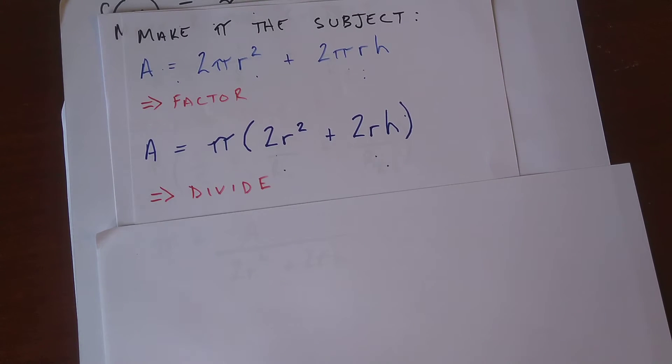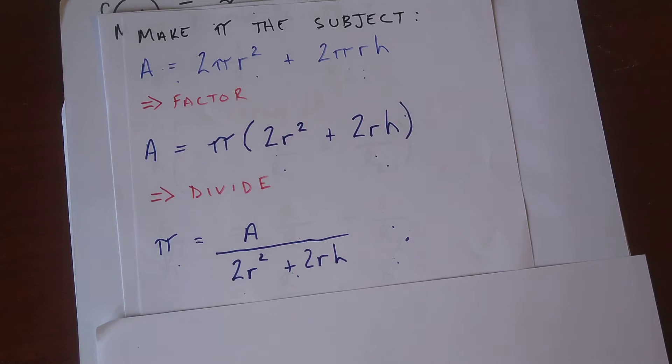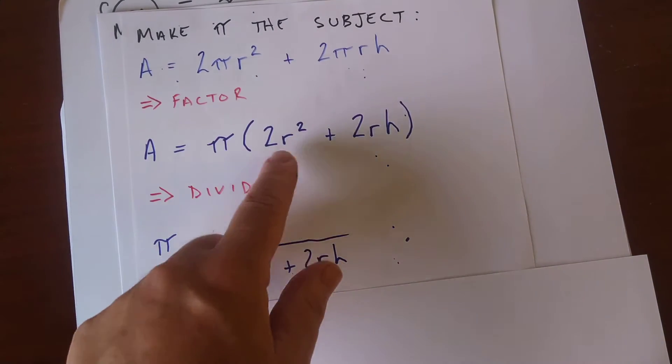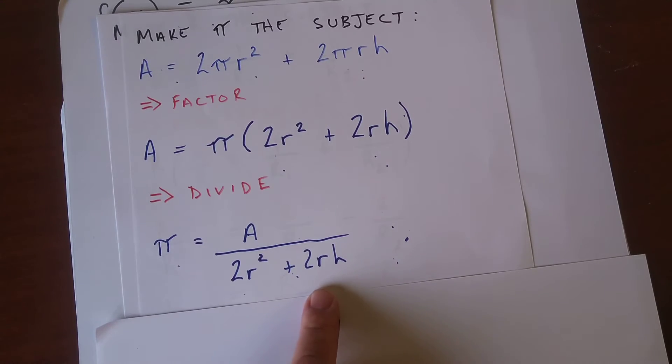So we divide it, and here's what we're left with. So π is equal to A over 2πr² plus 2πrh, sorry, 2rh.